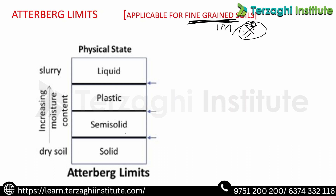Atterberg limits — there are three limits: liquid limit, plastic limit, and shrinkage limit. The corresponding states are solid, semi-solid, plastic, and liquid. As moisture content increases, the soil transitions through these states.